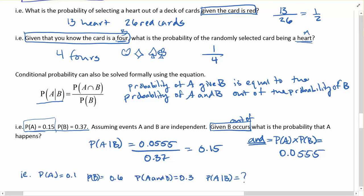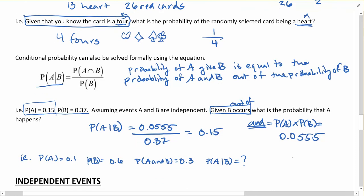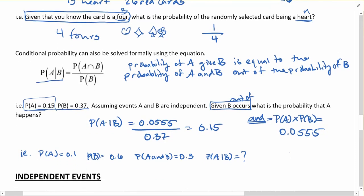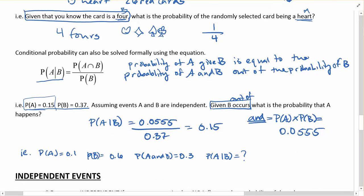Just to do one more example here quickly. I wrote that in there for you when you have non-independent events here. So the probability of A is 0.1, the probability of B is 0.6, and here I'm telling you the probability of A and B is 0.3. So here to get the probability of A given B, it's going to be the probability of A and B, which is 0.3, out of the probability of B, which is 0.6.